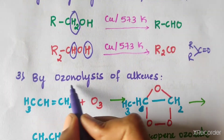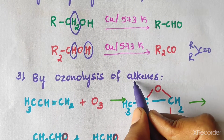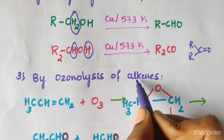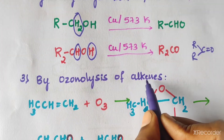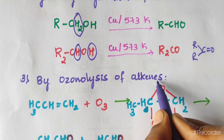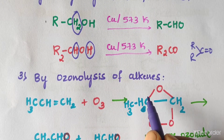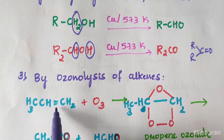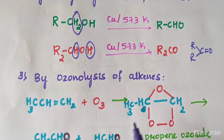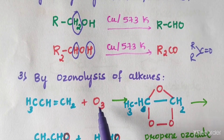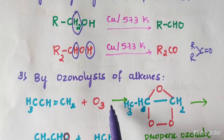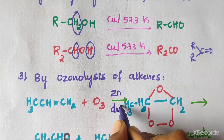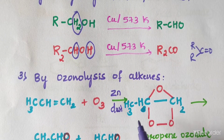The third method is by ozonolysis of alkenes. Alkenes on ozonolysis give aldehydes and ketones. Alkenes contain a double bond. The ozonolysis reaction uses ozone (O3) followed by zinc dust and water.